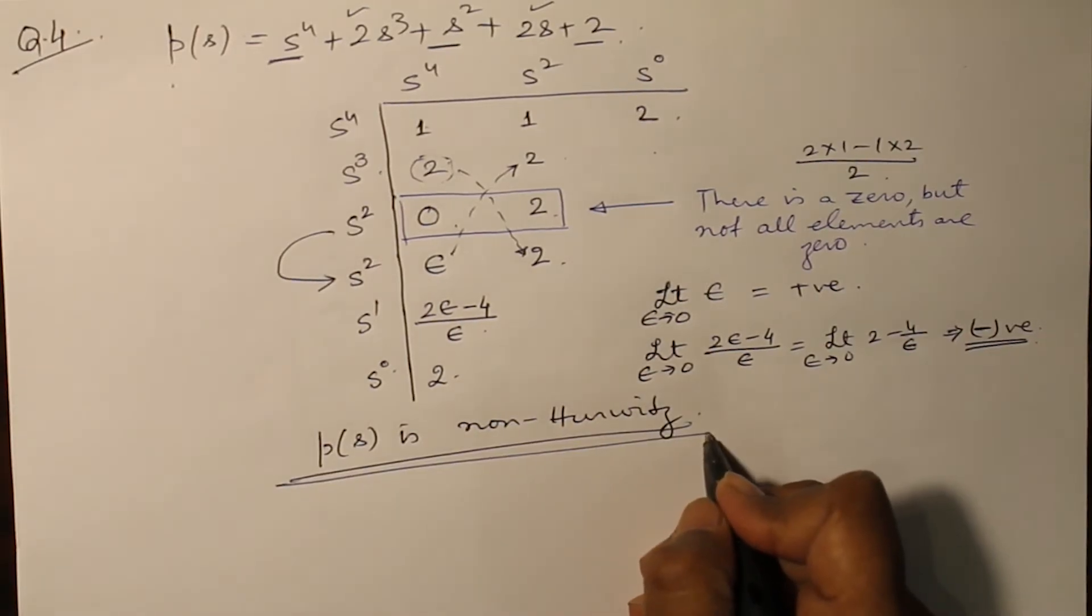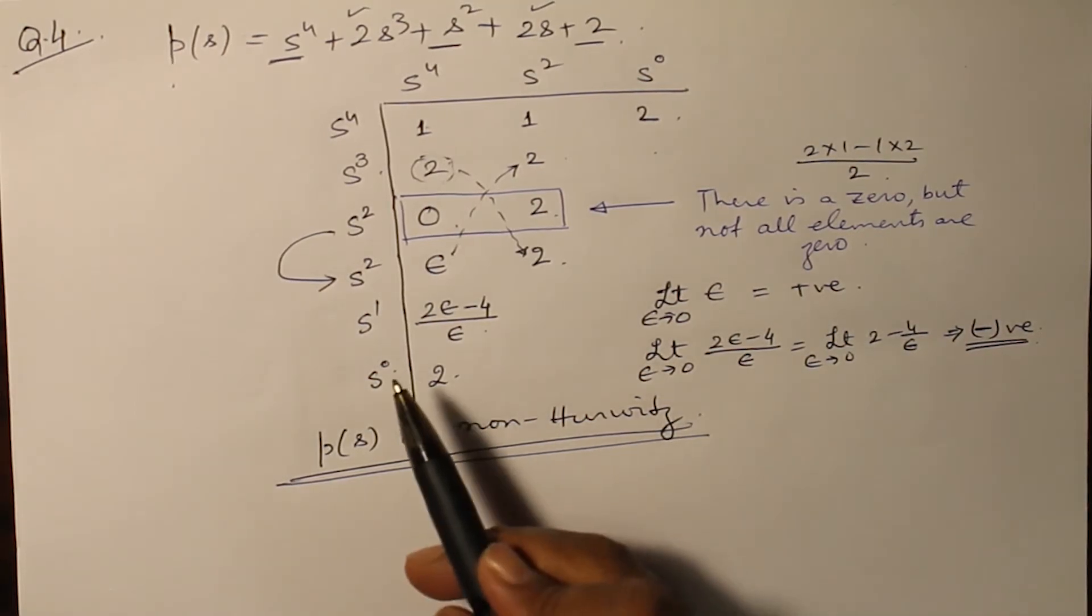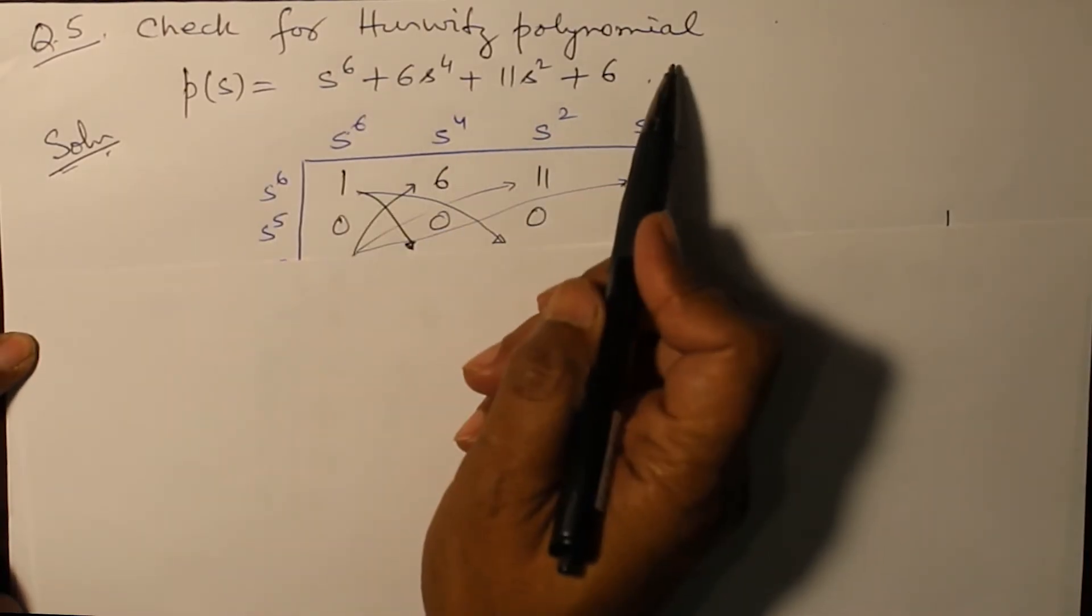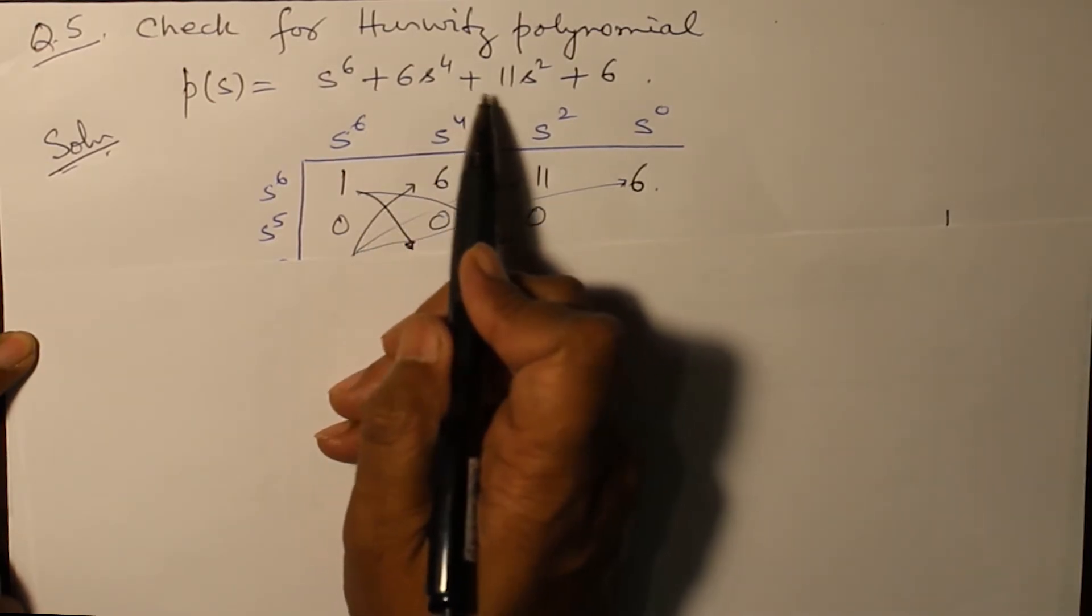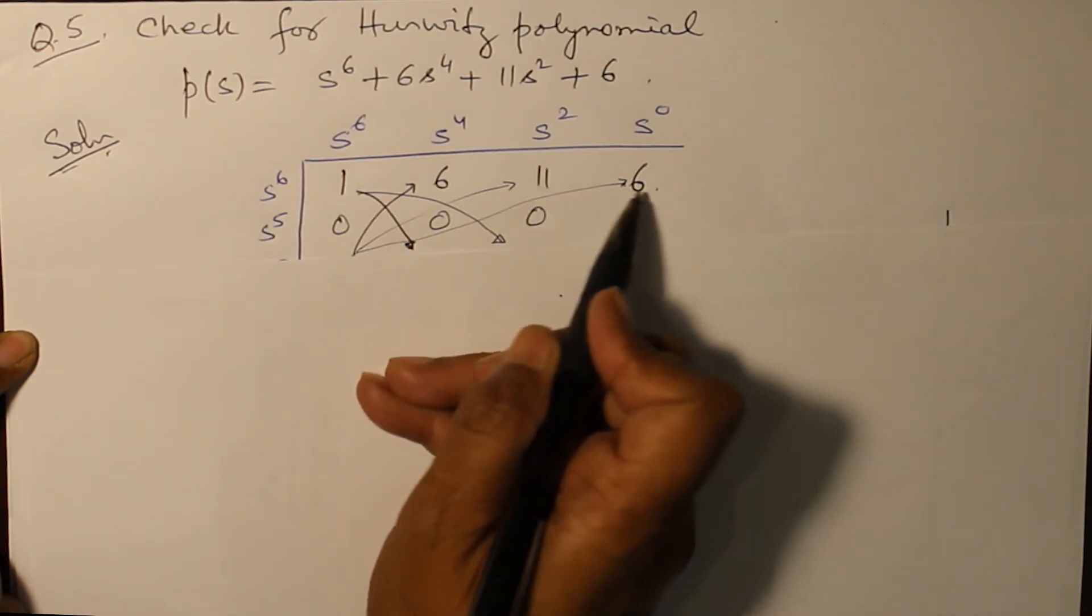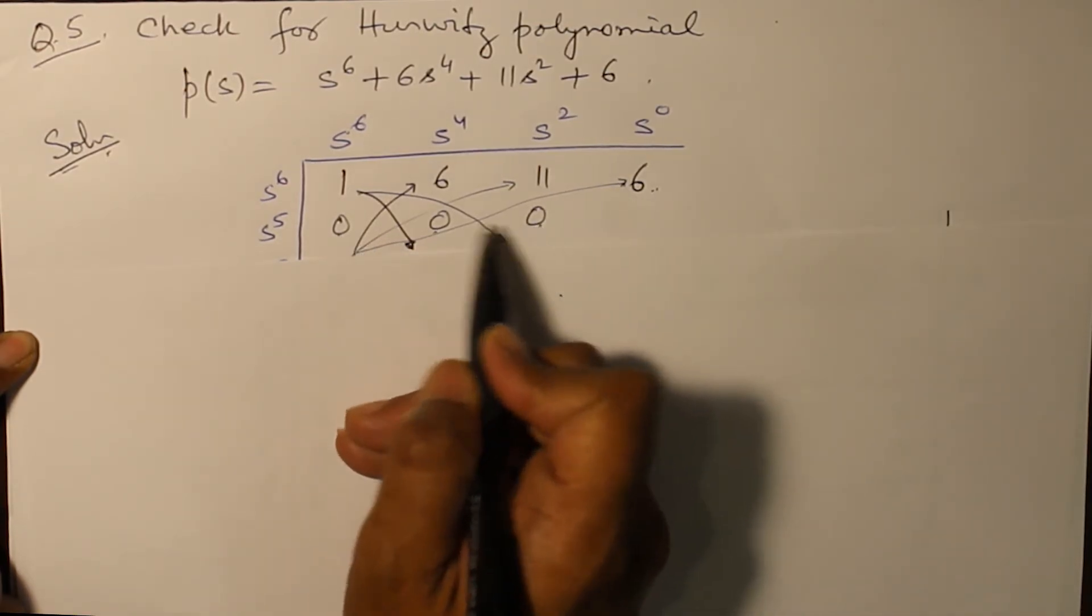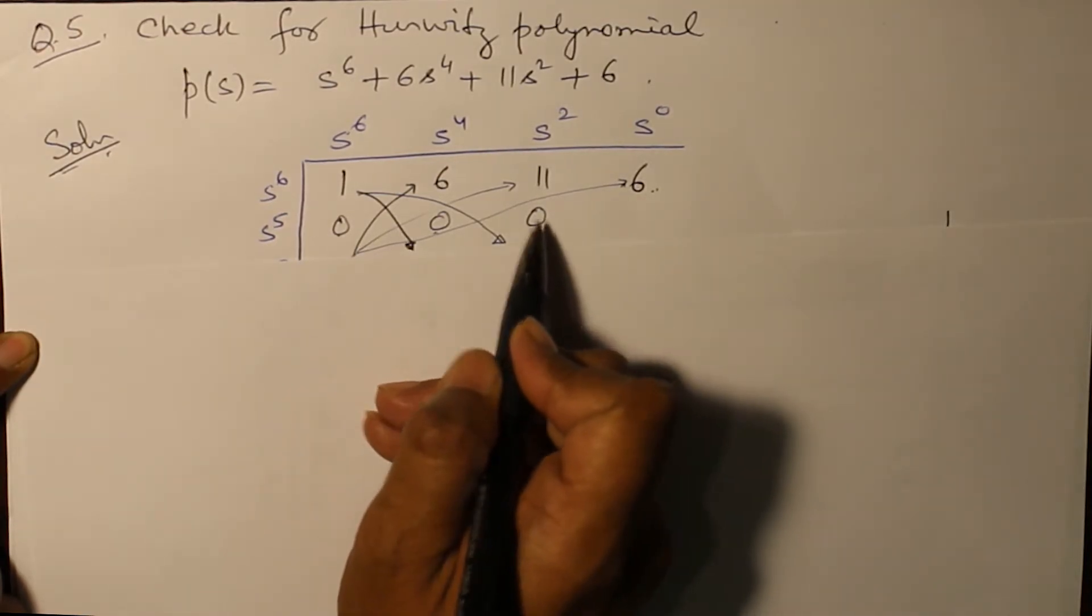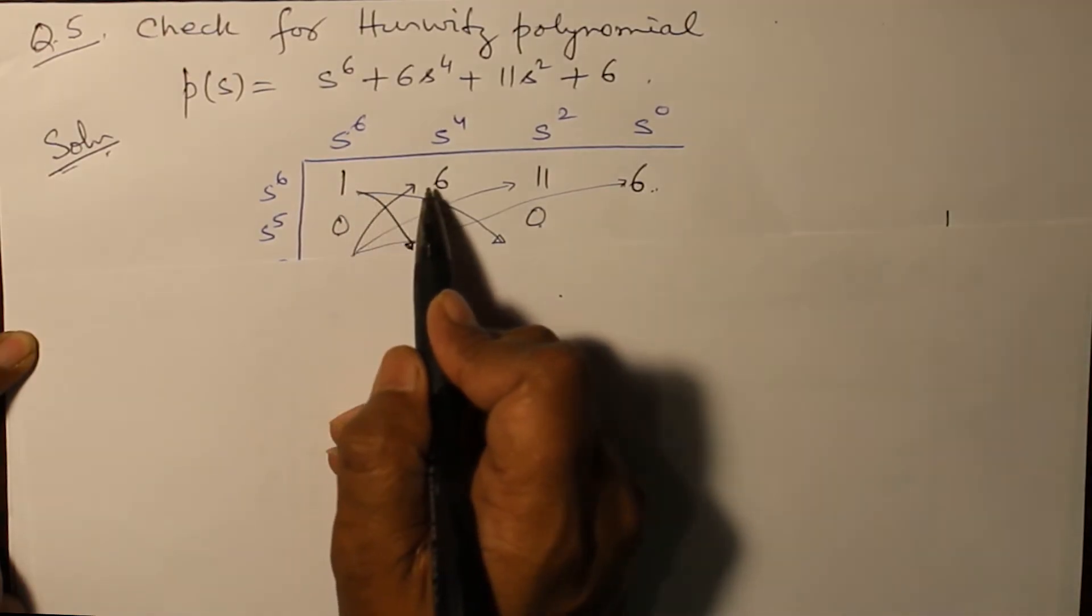Have you understood this question? Now let's move on to one more difficulty: if the entire row is zero, then what is to be done? Check for Hurwitz polynomial in which there are all odd coefficients absent. So 1, 6, 11, and 6 we have written, thereafter 0, 0, and 0. All such cases where the elements of a particular row are zero, we differentiate the row prior to it and we call it an auxiliary polynomial.